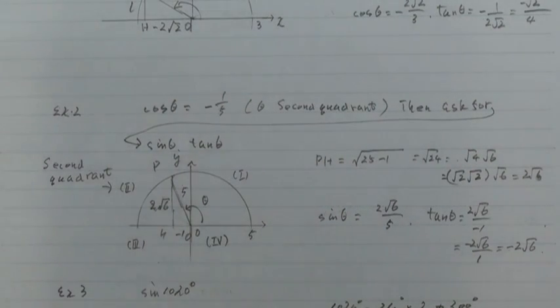Example 2. Cos theta equals minus 1 over 5.